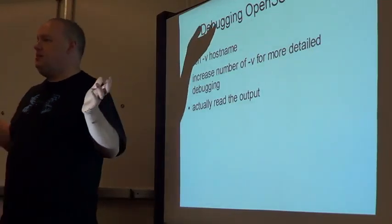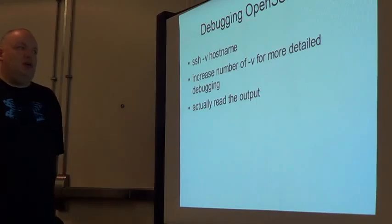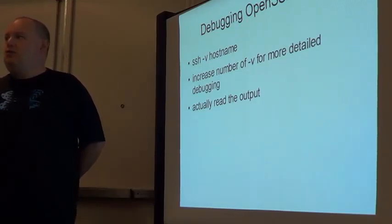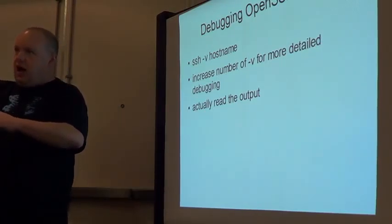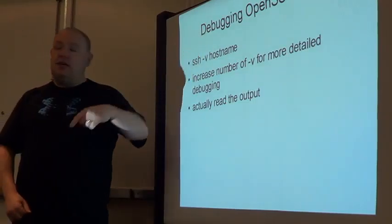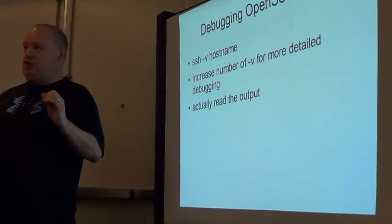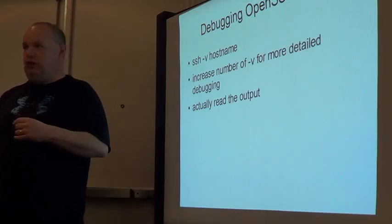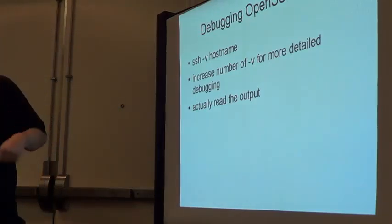Any time you start looking at OpenSSH, the first thing you need to know is how to fire up the debugger. Debugging will tell you why you don't connect. It will actually walk you through an entire connection and stop at some point if you have a failure. I would actually recommend you use 'ssh -v' a couple of times just to see what happens in a working SSH connection. That way when you need to debug it, you have an idea of what it should look like and how far along you got.